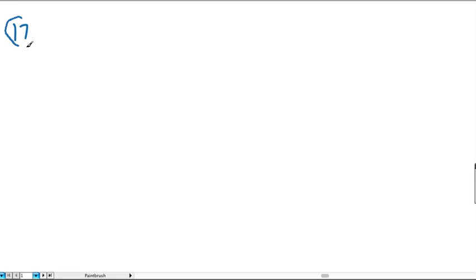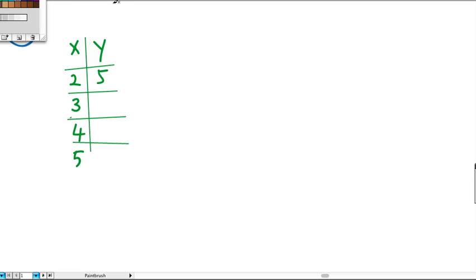Number 17 gives us this table with x and y values. The first number we have is x equals 2, we also have 3, 4, and 5. For our y's we have 5 and that's it.